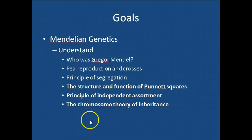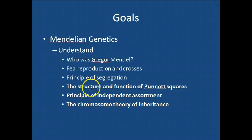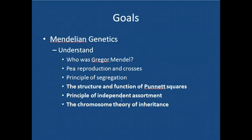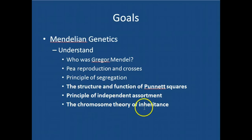Hello again everybody. We're going to illustrate the principle of segregation in this screencast, talk about and illustrate the structure and function of Punnett squares. We're going to talk about a dihybrid cross in which you're following the inheritance of two traits and how important the principle of independent assortment is in following those two traits and the chromosome theory of inheritance.